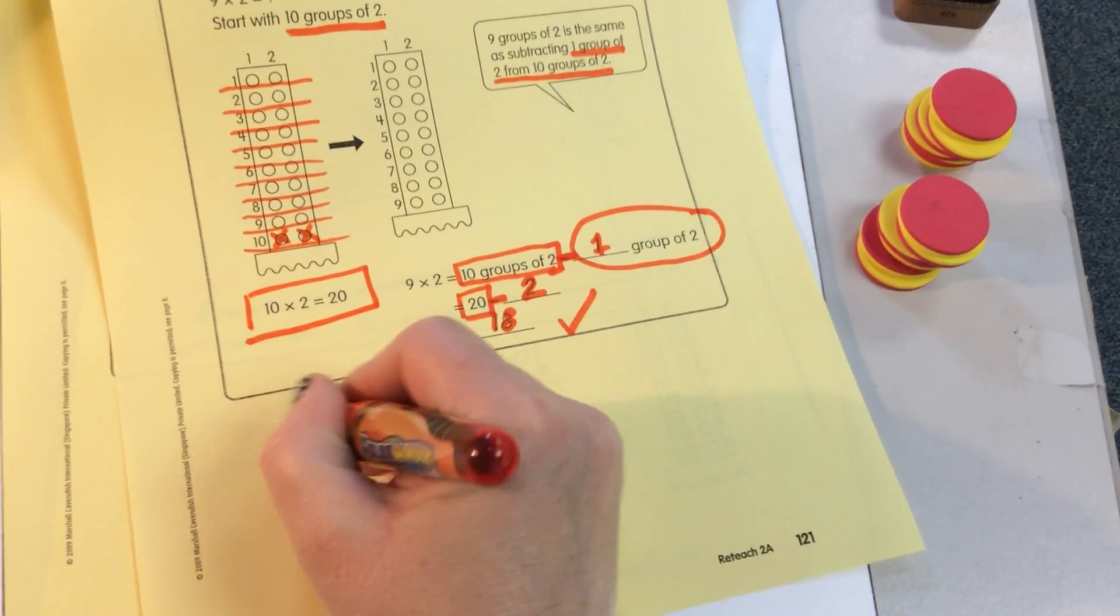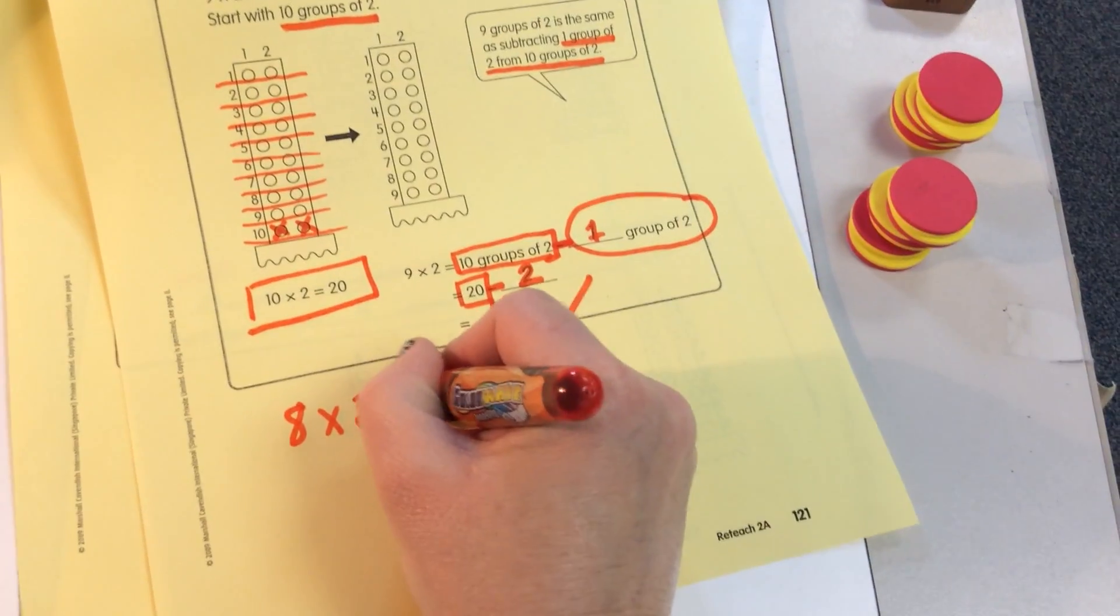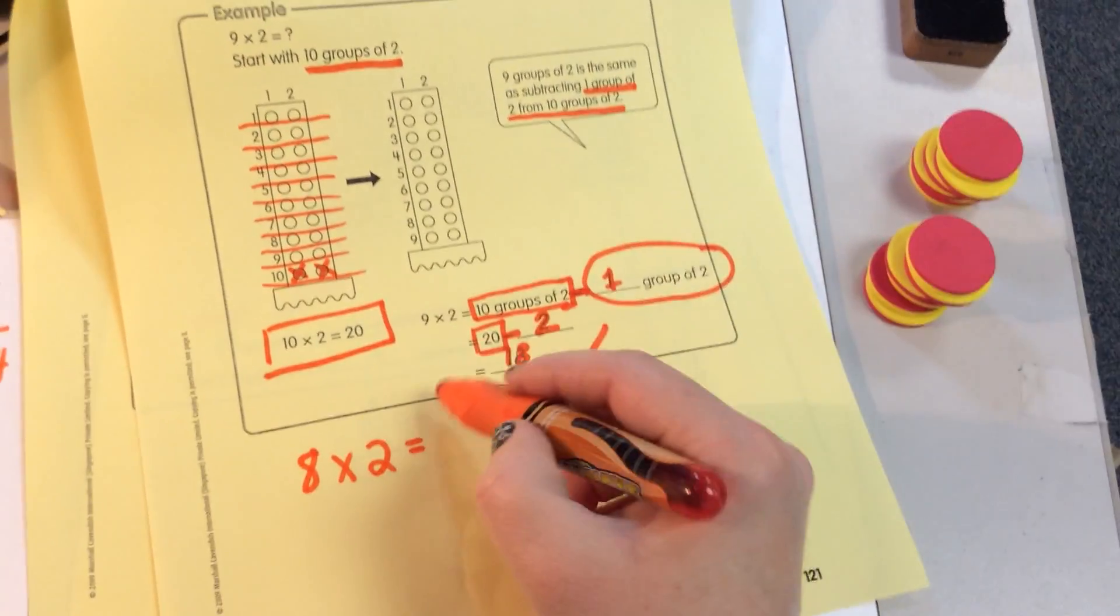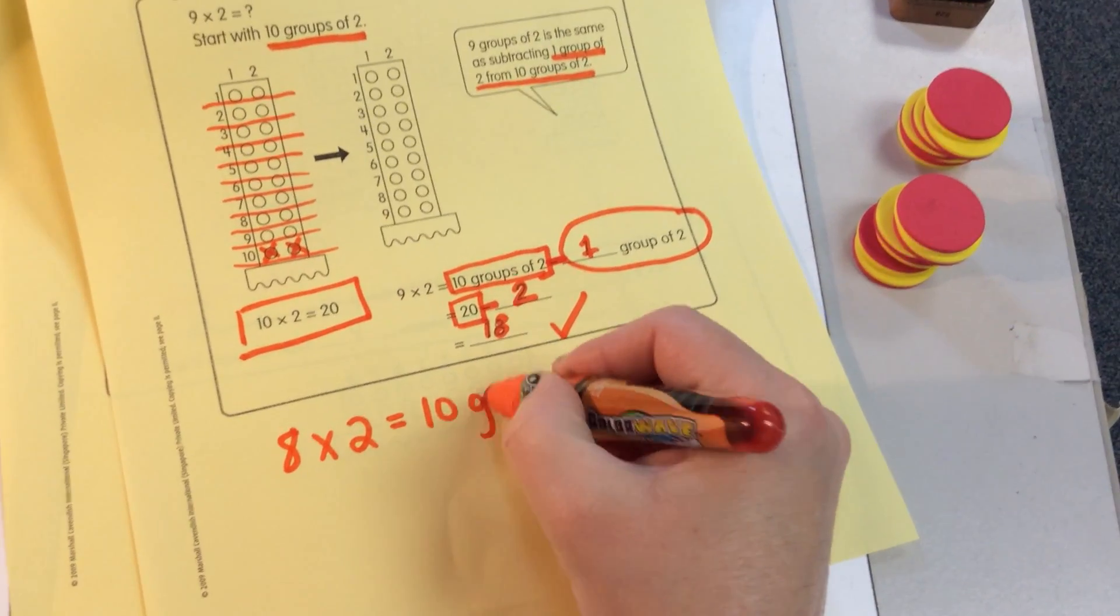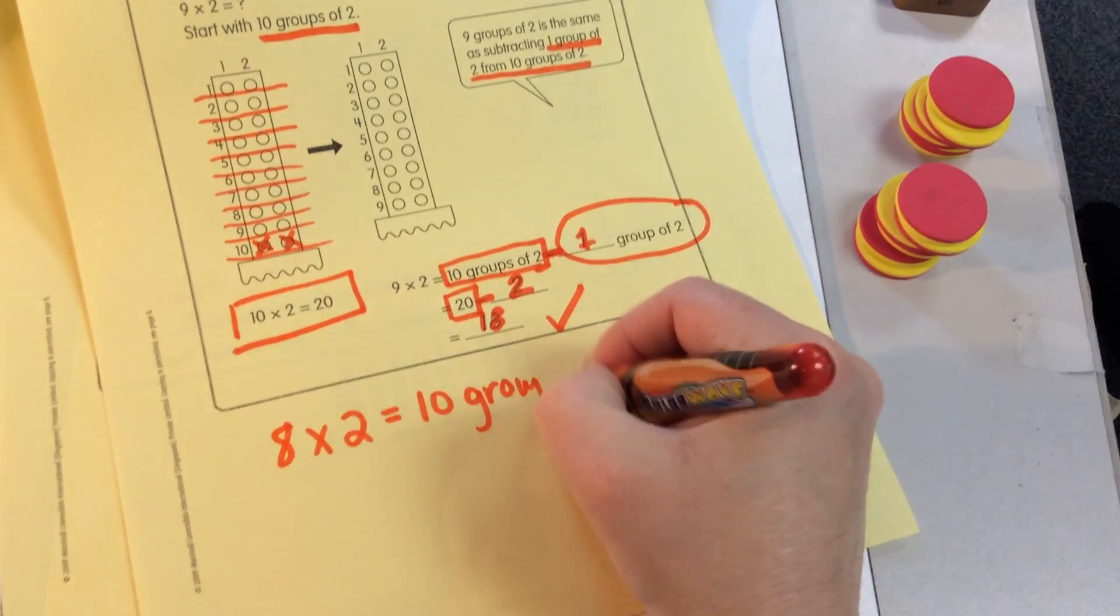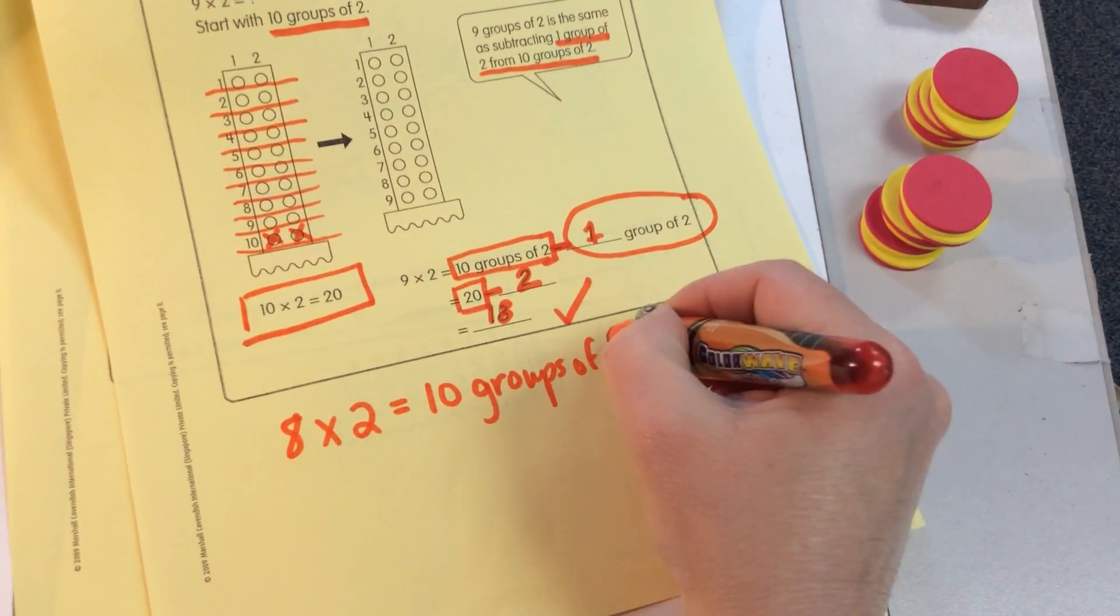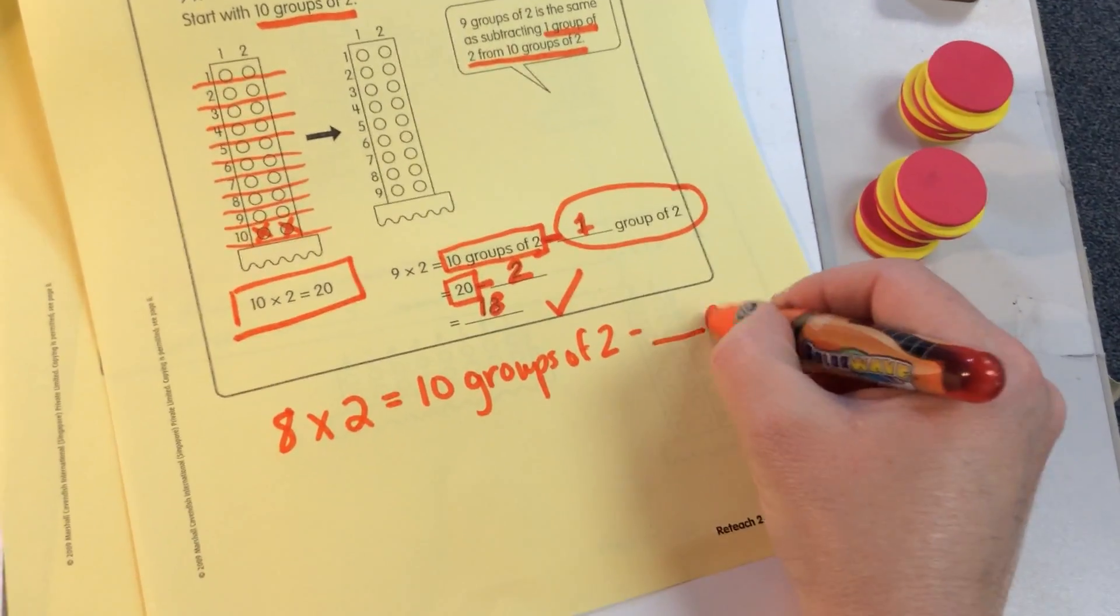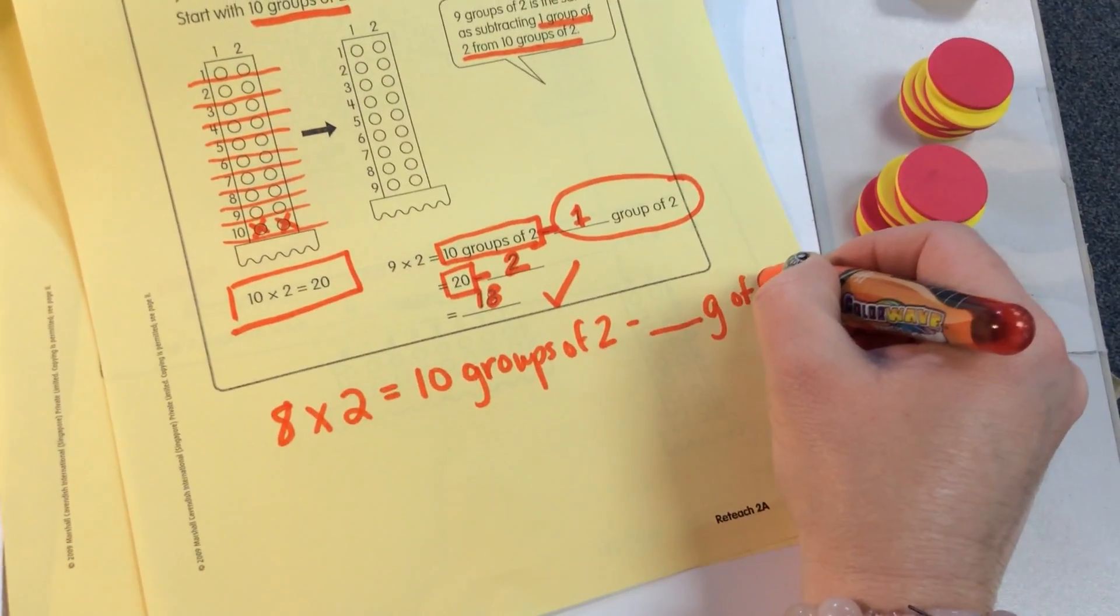So I want you to add one more. And I want you to do 8 times 2. Is equal. And again, we're using 10 groups of 2. Minus 10 groups of 2.